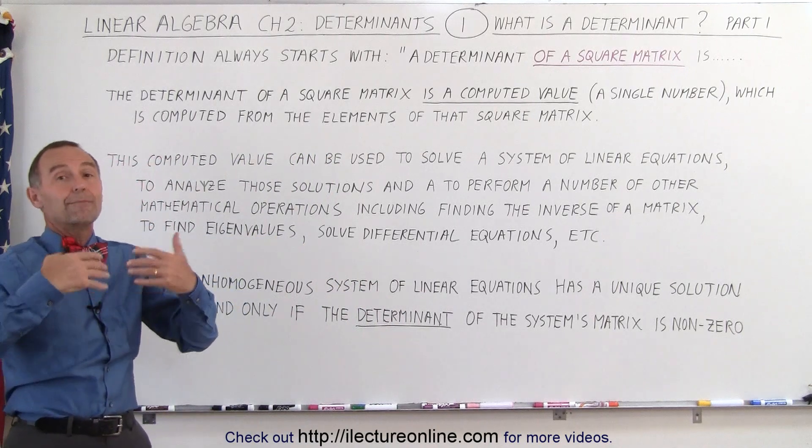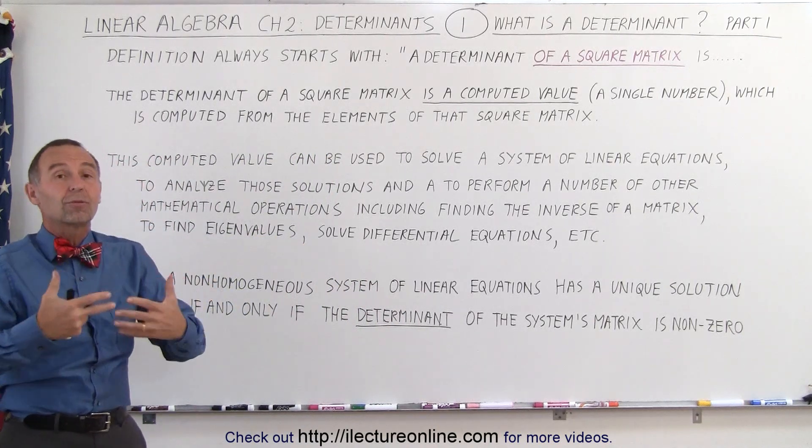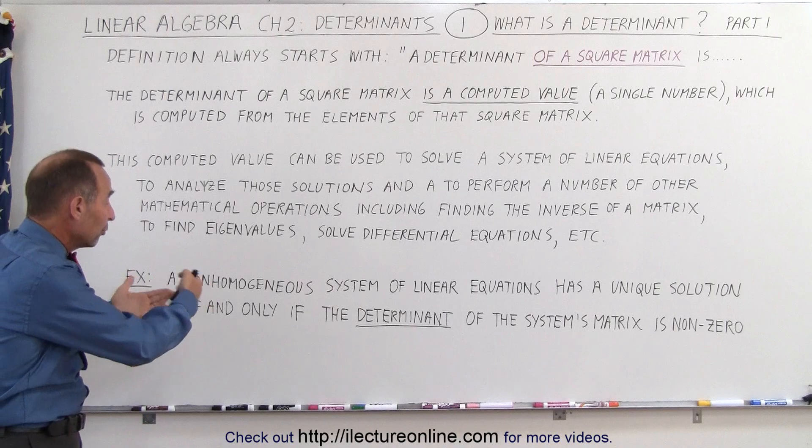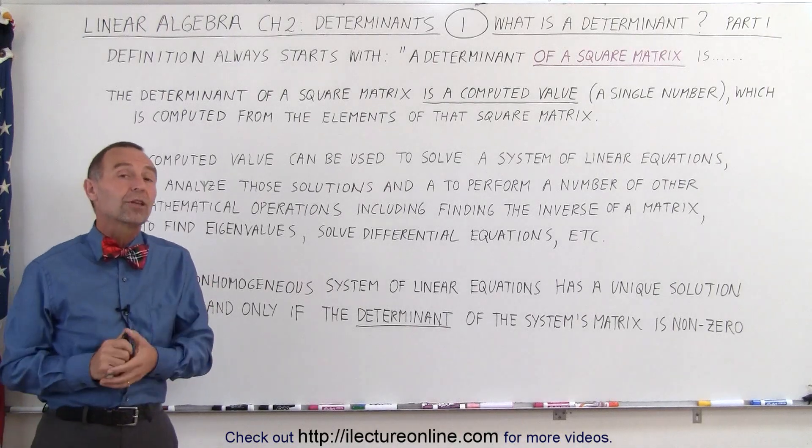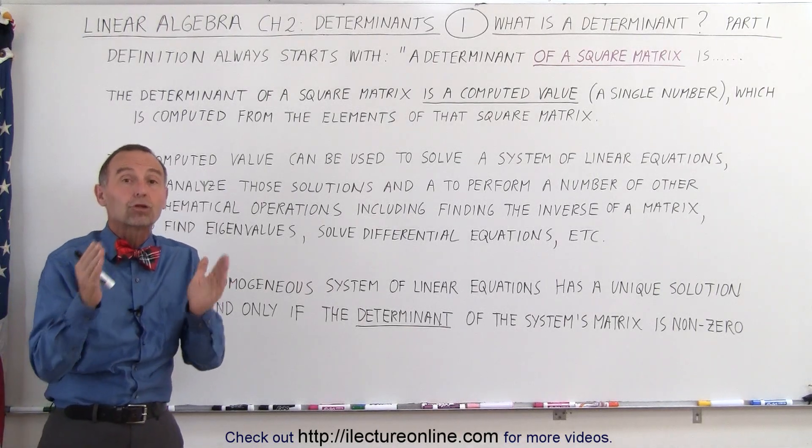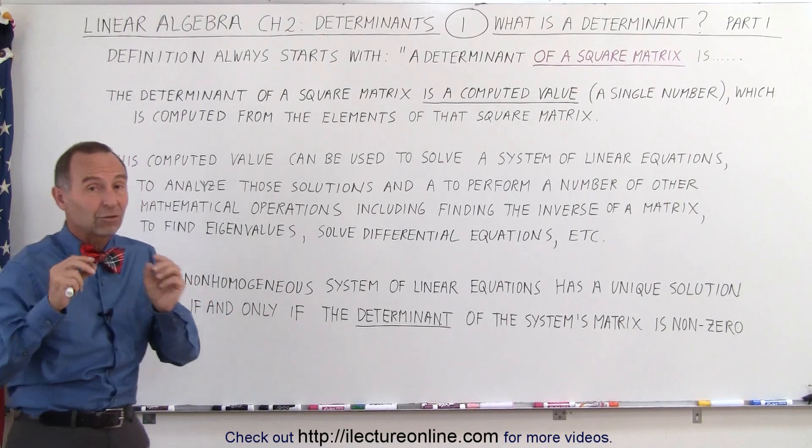So if you have a matrix that's derived from a system of linear equations, a non-homogeneous system of linear equations, and then you find the determinant of that matrix, and it's not zero,